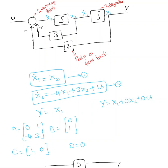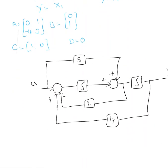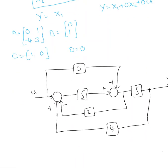So y equals x1 plus 0 times x2 plus 0 times u. Remembering the standard form x_dot equals Ax plus Bu and y equals Cx plus Du, those are the matrices for this example. Let me go with another example.